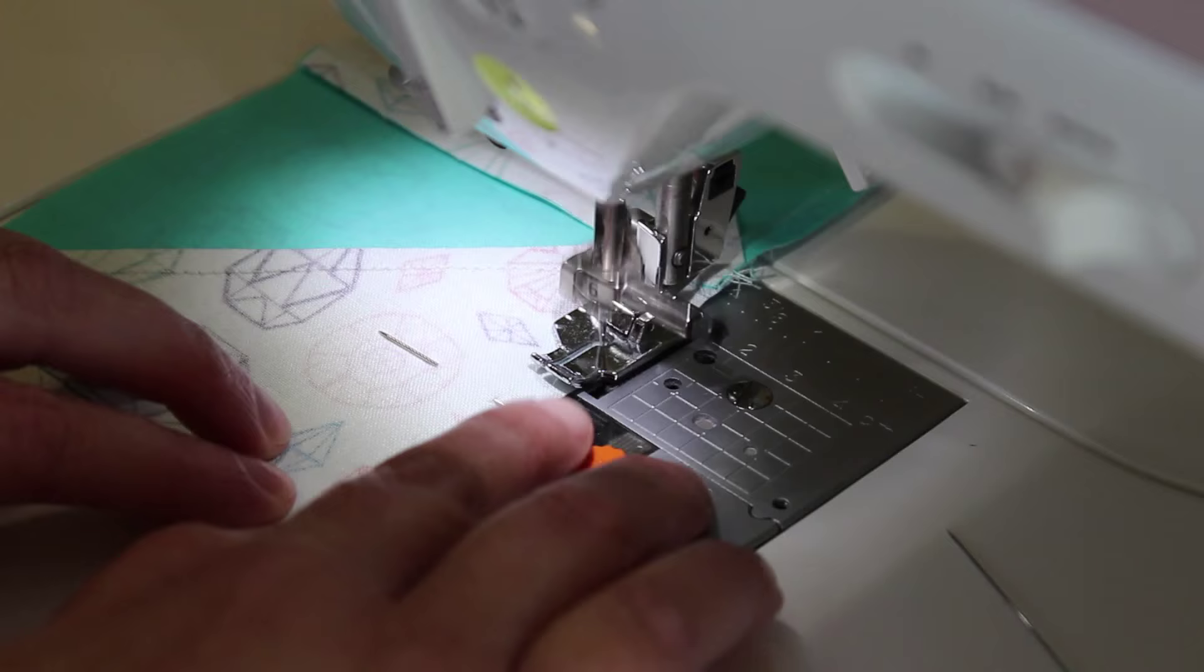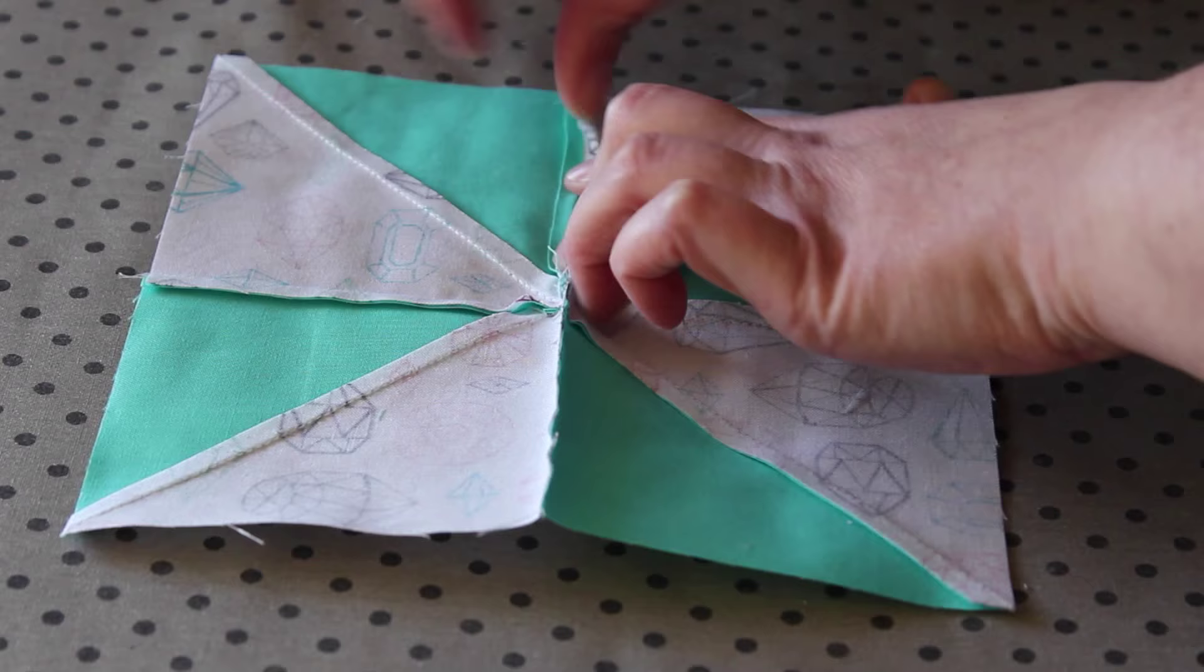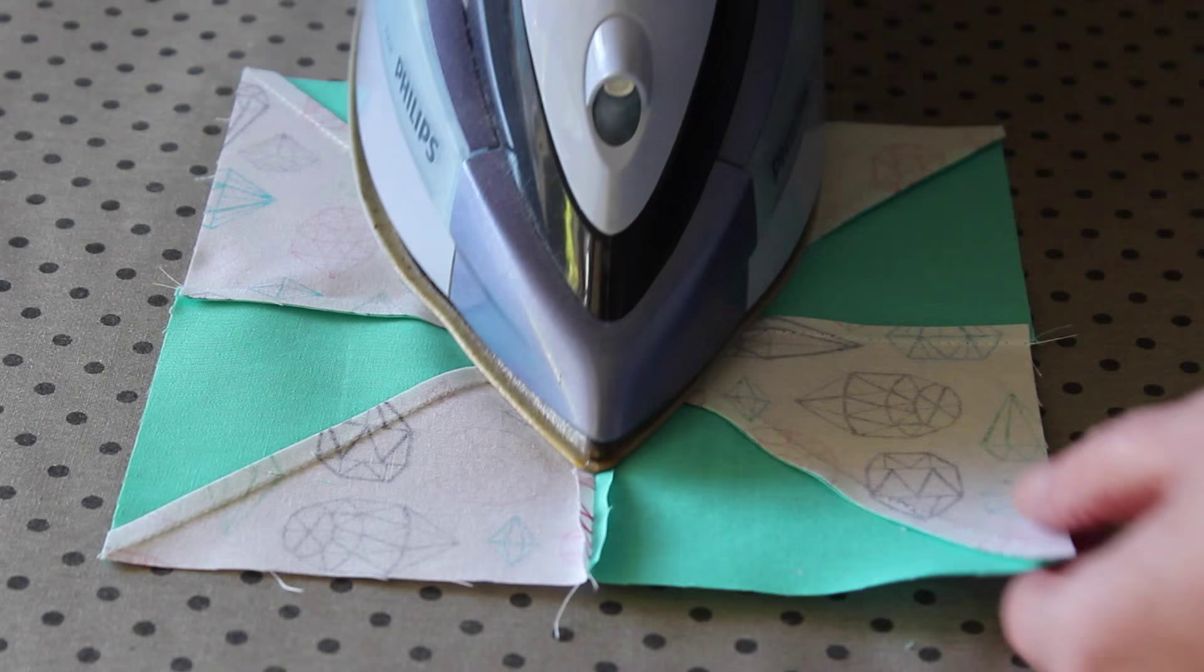Open out the block and using your fingers, press the centre seam open. Then, with the iron, press the seam and the rest of the block flat.